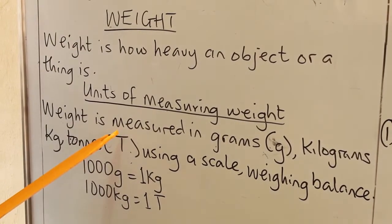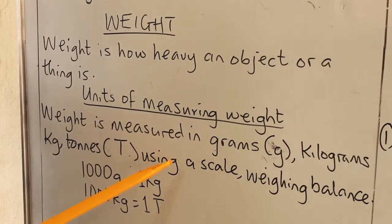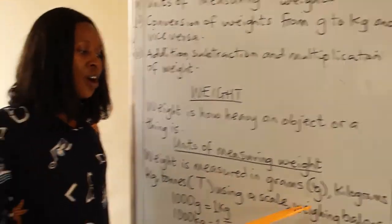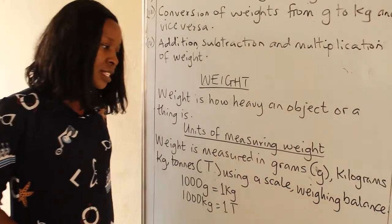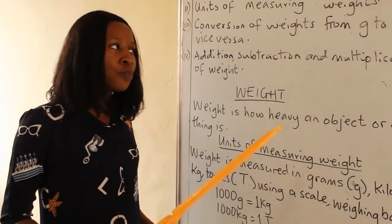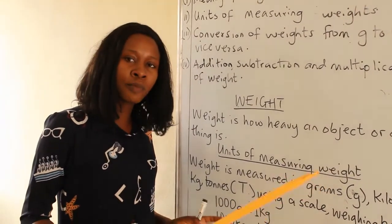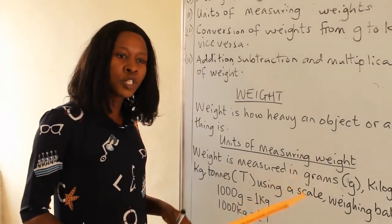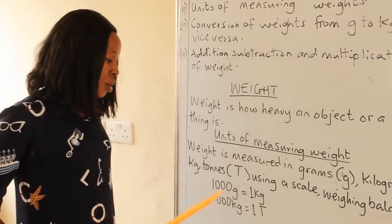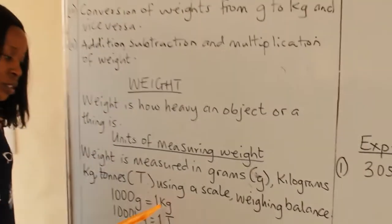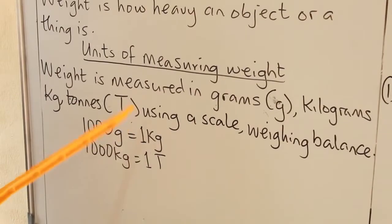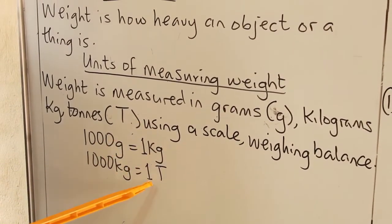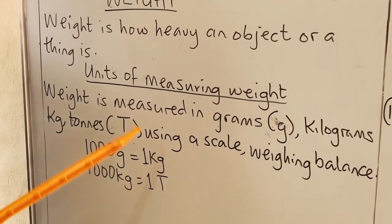The symbol for tonne is capital letter T. Weight is usually measured using a scale. The relationship between gram and kilogram is 1,000 grams equals 1 kilogram. And 1,000 kilograms is equal to 1 tonne.